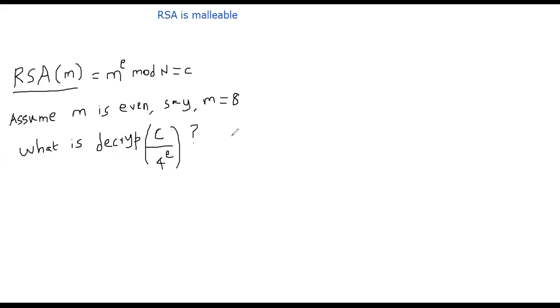As an attacker, you obtain c by monitoring the traffic. And you compute c by 4 power e and submit to the server. The server is the one who is going to decrypt it. So what will be the value of c by 4 power e when it is decrypted by the server? Let's reason about it.